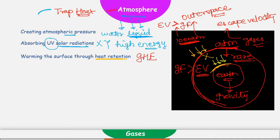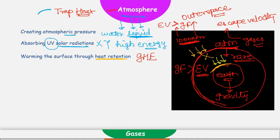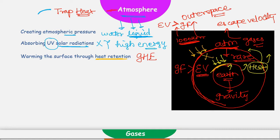Earth's surface temperature is less than the temperature of these solar radiations. After receiving solar radiations, Earth's surface temperature will go up and then Earth starts emitting or radiating heat. This heat will be trapped by atmosphere. Atmosphere will not allow this heat to escape to outer space, and that is how atmosphere will provide a warm ring to Earth's surface and will never allow the Earth to become too cold.